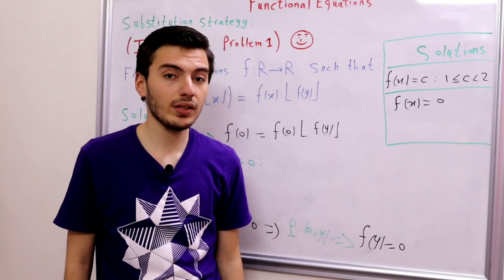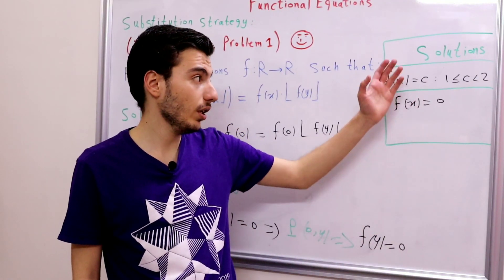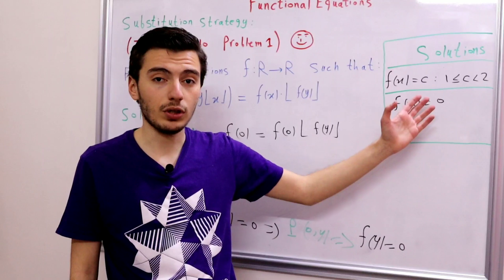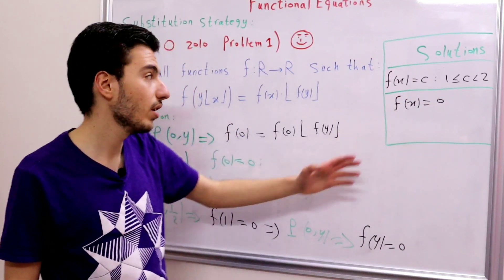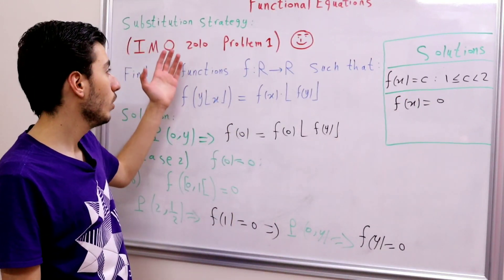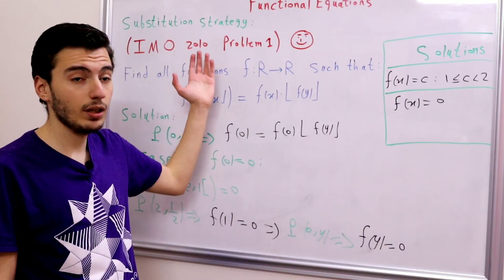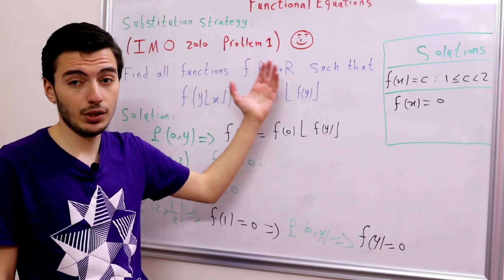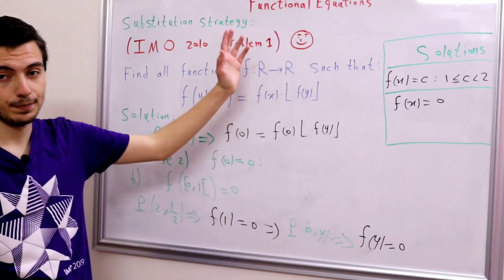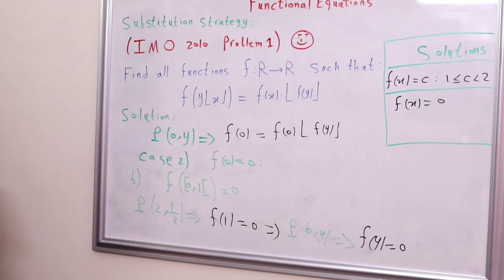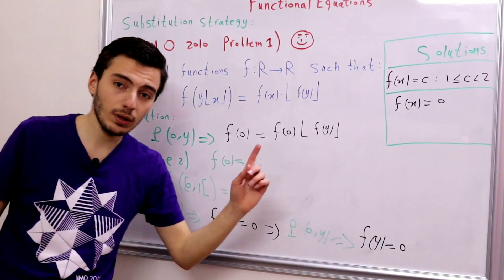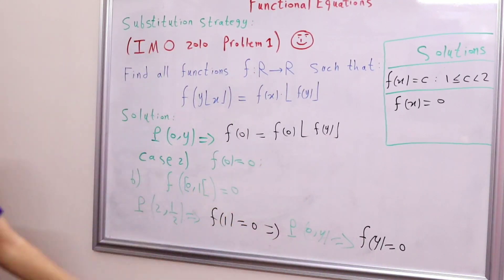We've obtained 2 sets of solutions: f(x) = 0, and f(x) = c with 1 ≤ c < 2. IMO 2010 Problem 1 is solved! Don't forget to subscribe to the channel and share it with your friends.